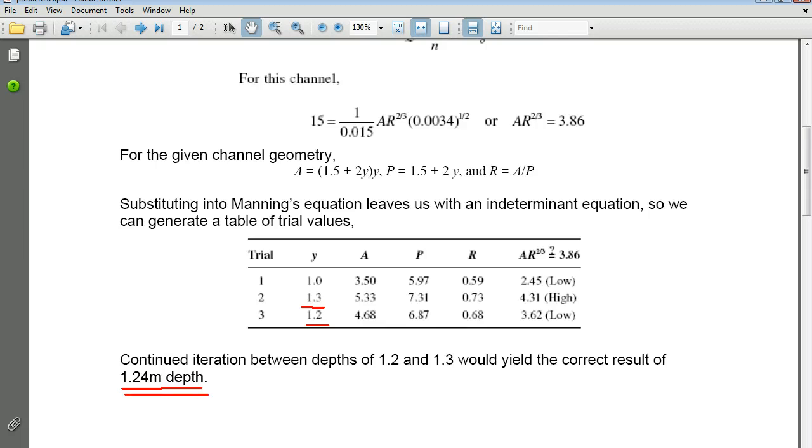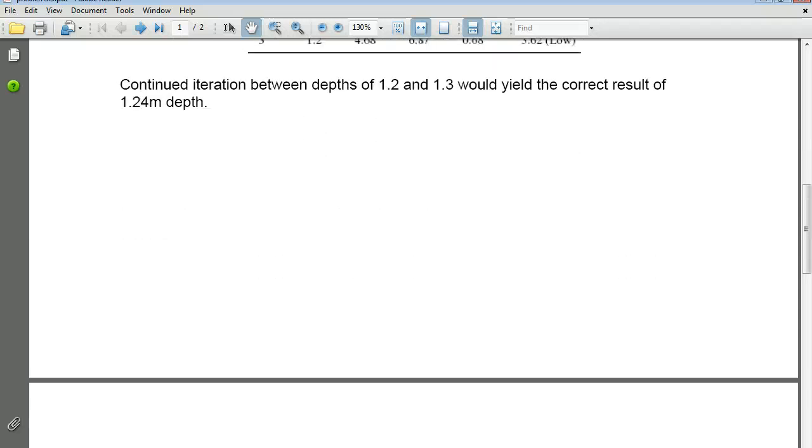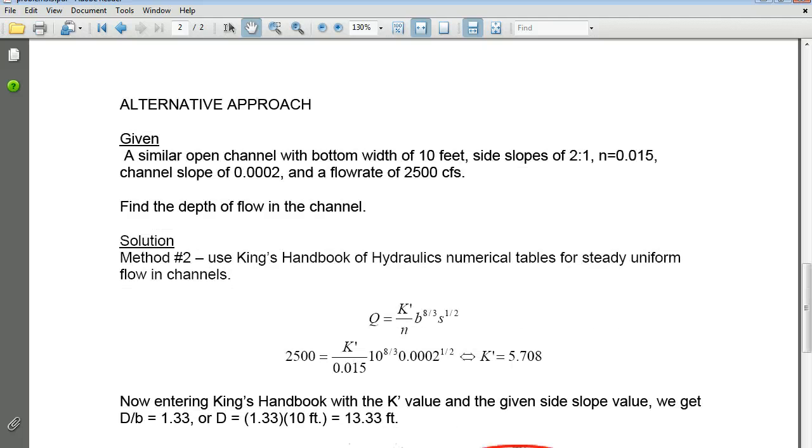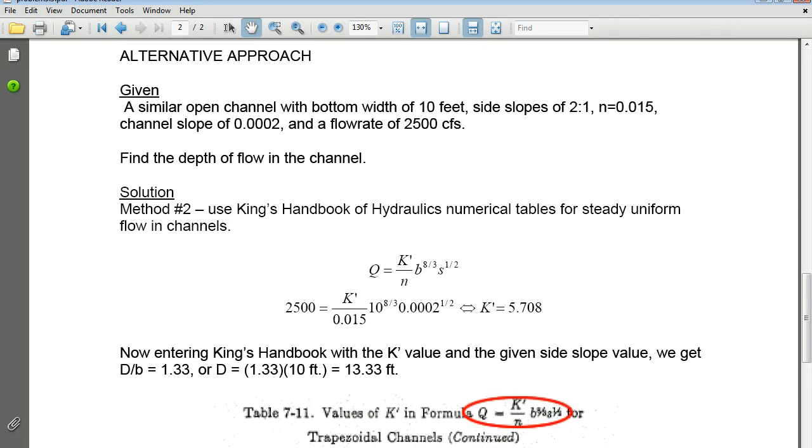Now the problem with this is, even though it's all correct, the problem is that it takes too much time. Remember, on the civil PE exam, you have about 6 minutes per problem to come up with stuff. So what's the alternative method? Well, let me show you that. We go on to page 2 of this. I'm going to introduce the same problem, except I'm going to change up the numbers on it, the figures on it.